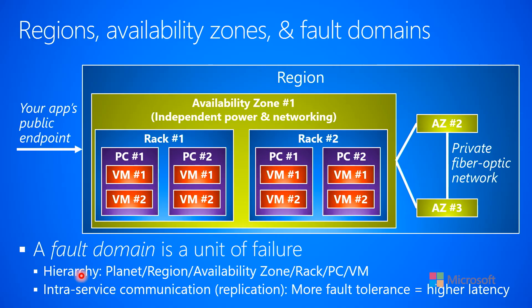So we have this hierarchy where the VM is the smallest thing, PC is above it, rack is above it, availability zone is above it, region is above that, and then above that is the planet. So if you have lots of different regions but they're all on the same planet, if something happens to the Earth, then we've lost all the regions. One of the things I like to say is that the planet — or the Earth — is a single point of failure, and it's really hard to build a service robust enough against planet failure.